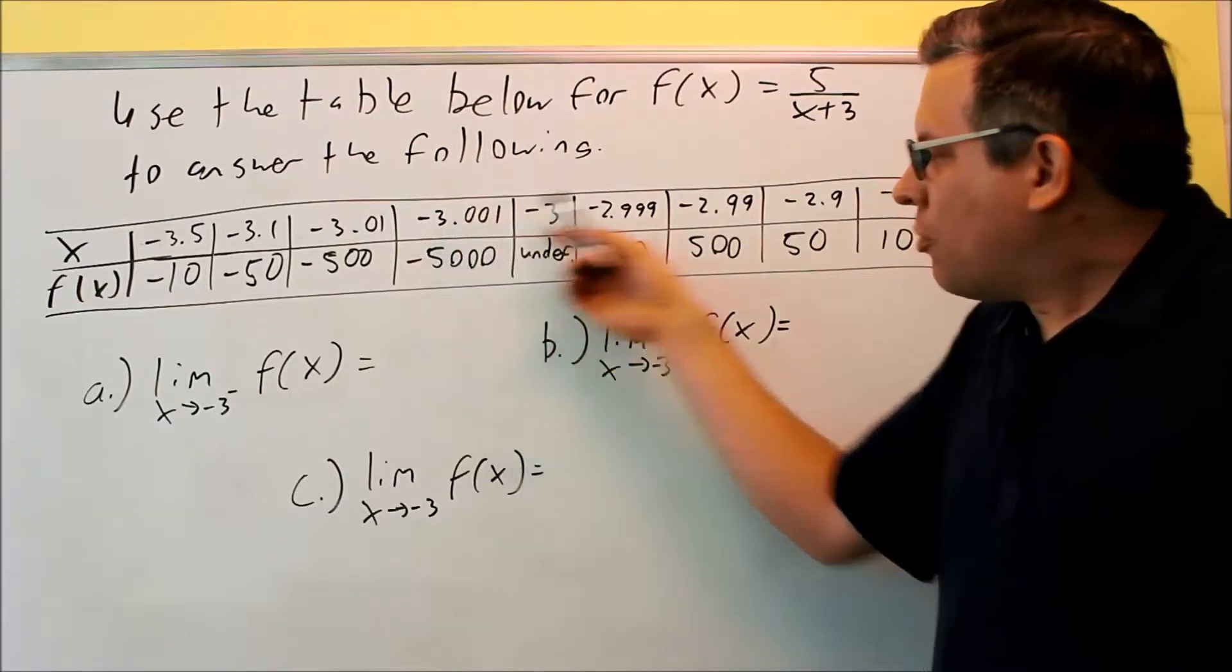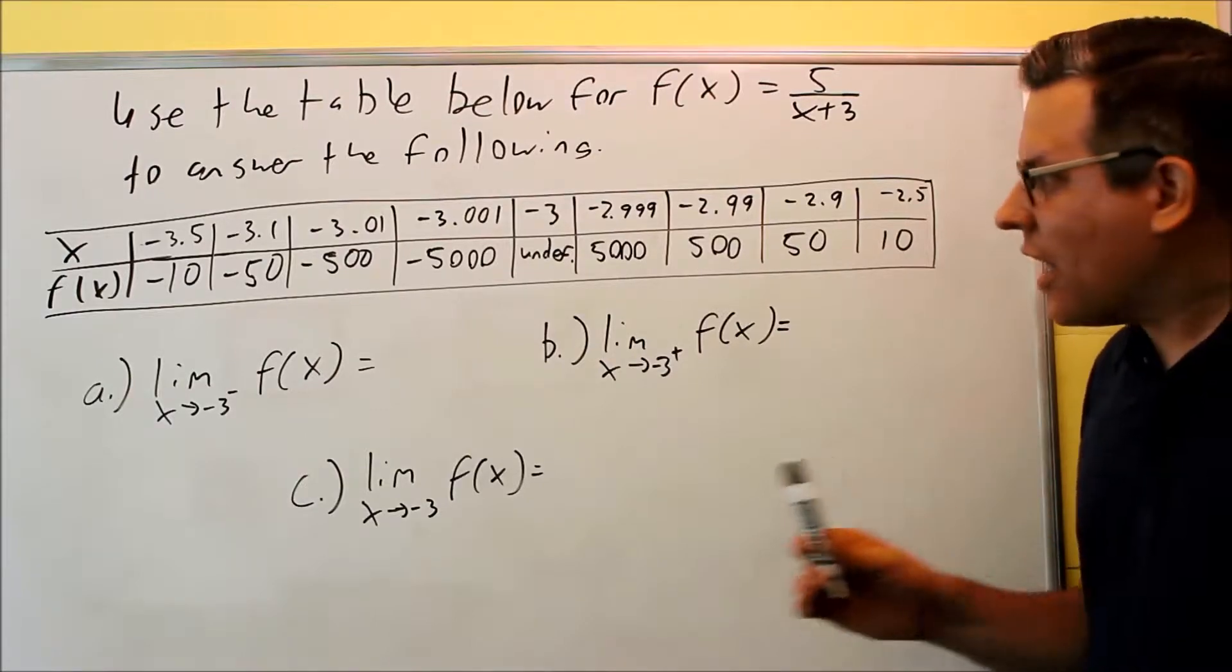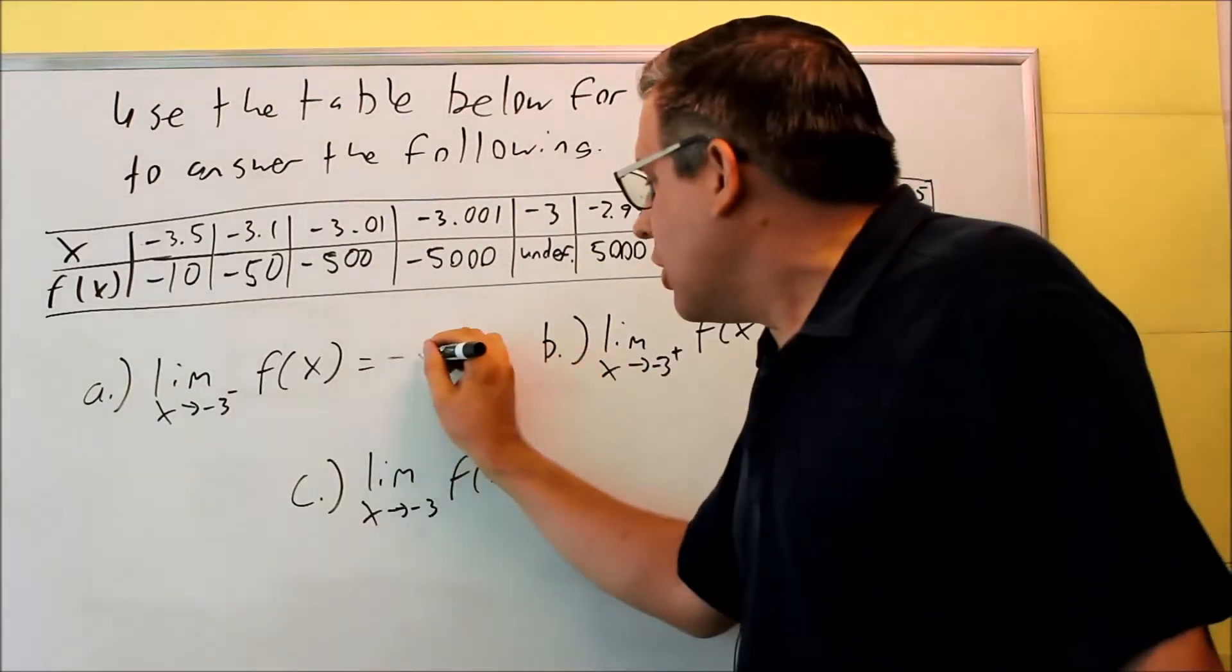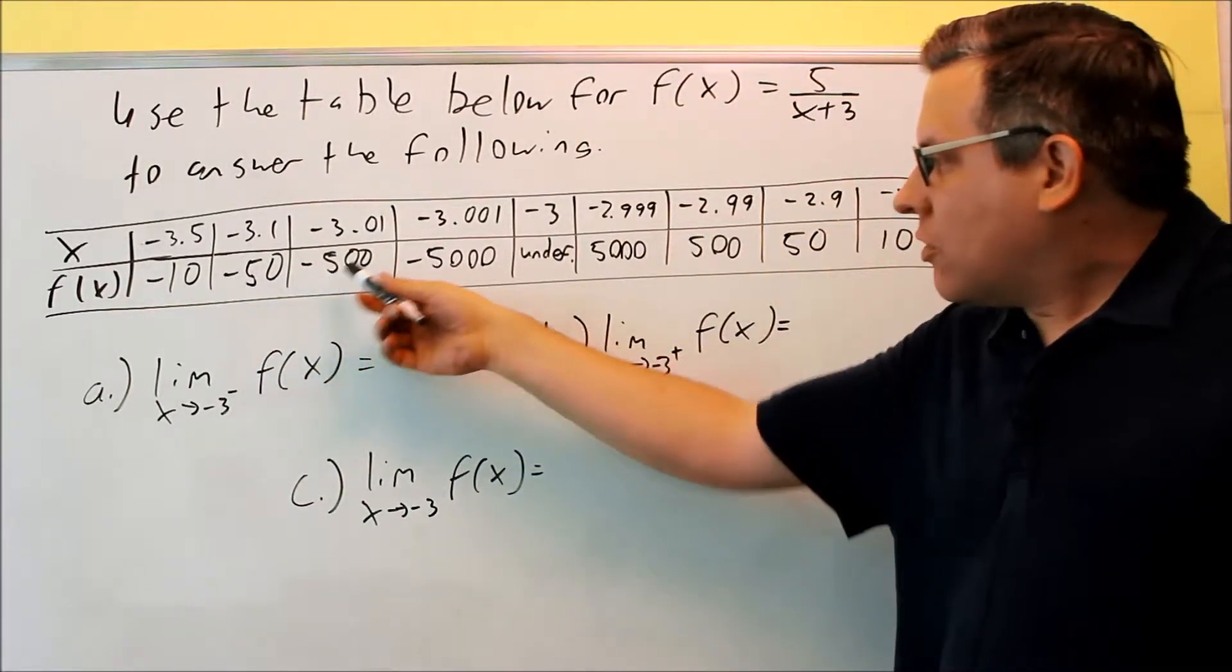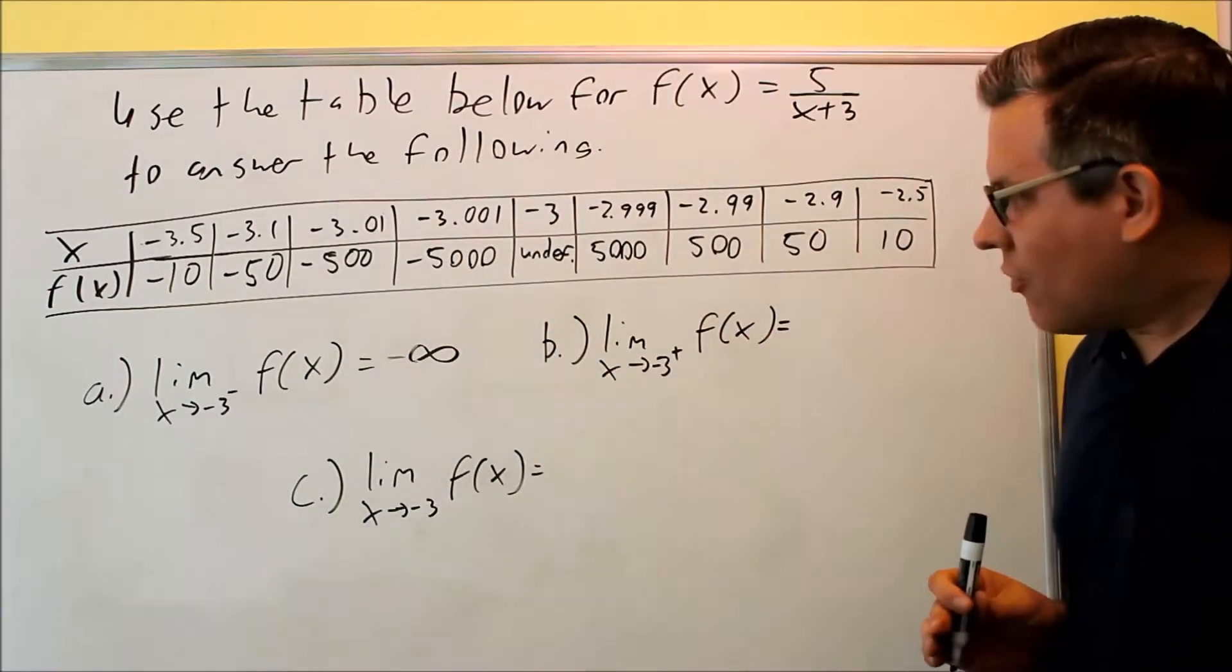So if I have a whole bunch of 0s and a 1, that means I'll get a whole bunch of 0s here. What's happening is that value is going to be approaching negative infinity, and that's what I'm going to put here for my answer. I see the trend—they're getting larger negative numbers, so it's going to go to negative infinity.